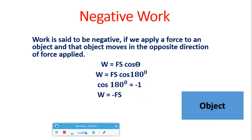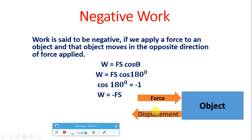Work is said to be negative if we apply a force to an object and that object moves in the opposite direction of the force applied. In this case, the angle between force and displacement becomes 180 degrees. For example, if we apply force from left to right but the object displaces from right to left, then since cos 180° equals minus one, W equals minus F times S.